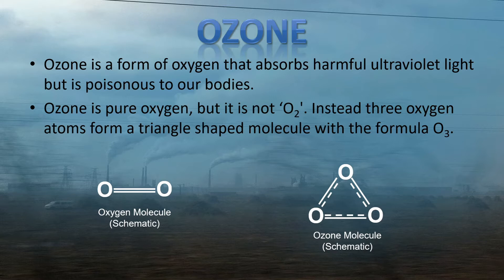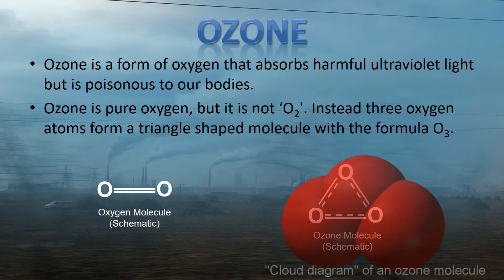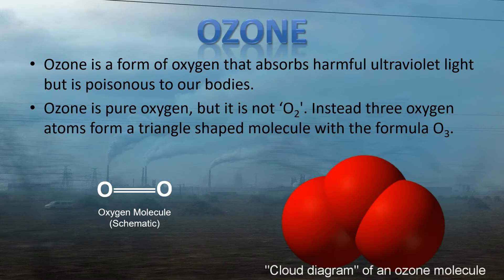Side note: we said that ozone is poisonous to the body. Technically, so is O2. Normal oxygen is poisonous, but we still need it to live. Oxygen is really, really good at reacting with things, and this is why our bodies can use it to help us make energy. Unfortunately, it can also react with our bodies, and this can cause damage too.